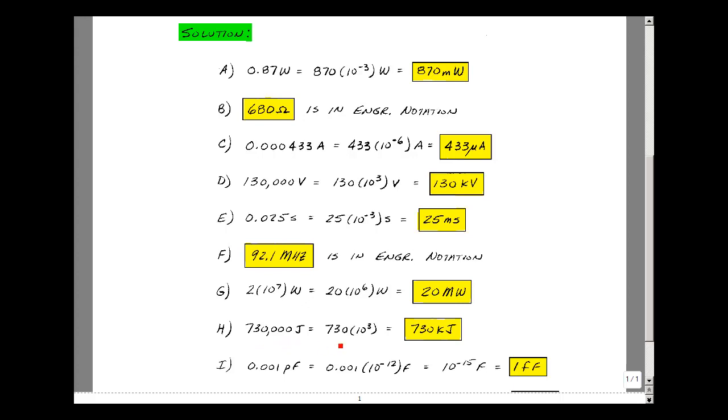730,000 we could write as 730 times 10 to the 3. 730 kilojoules. 0.001 picofarads is 0.001 times 10 to the minus 12th. Move this over three places. We'll multiply this by 10 to the minus 3. So we get 10 to the minus 15th. And 10 to the minus 15th is femto. So it becomes one femtofarad.